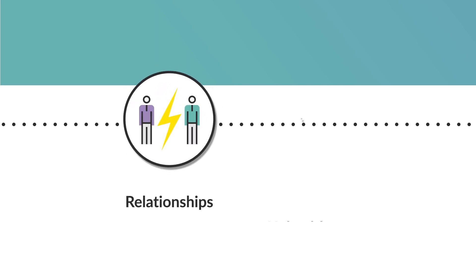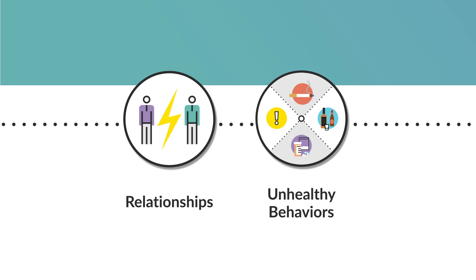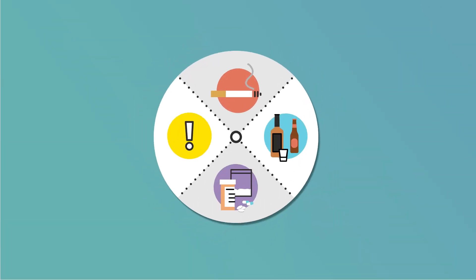Children growing up with toxic stress may have difficulty forming healthy, stable relationships and may adopt unhealthy behaviors to cope. These unhealthy coping behaviors can include smoking, using alcohol or other substances, or engaging in risky sexual behaviors.